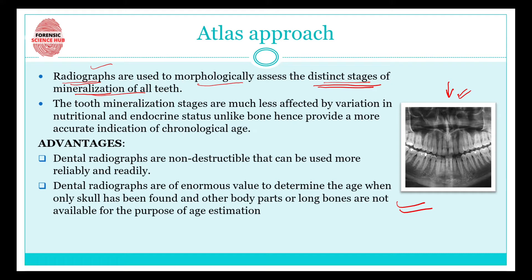There are various stages of mineralization of teeth, and we can determine which stage a person's teeth were in, and on that basis the age of the person can be estimated. Tooth mineralization stages are much less affected by variation in nutritional and endocrine status — unlike bones — and hence provide a more accurate indication of chronological age. Bones' mineralization stages can be affected by nutritional habits or endocrine status, but this is not the case with teeth.